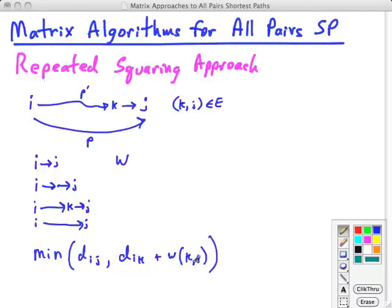Then we just keep repeating, essentially we're adding an edge on, we're making the, in terms of number of edges, the shortest paths longer, to see if they're shorter in terms of weights as we make them longer that way.